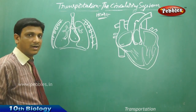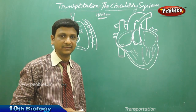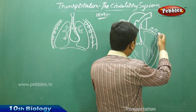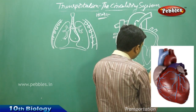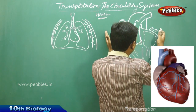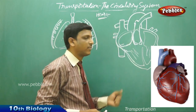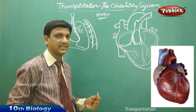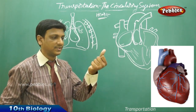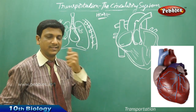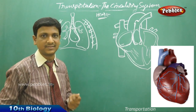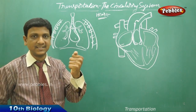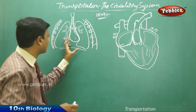The heart is a pear-shaped organ. If you observe the heart shape, it is wide at the top end and narrow or pointed towards the lower end — broader at the top, narrow at the bottom, in the shape of a pear. The size of a person's heart will be approximately the size of their fist, giving us an idea of how large the heart is.